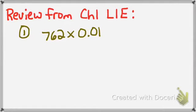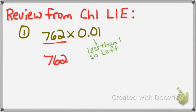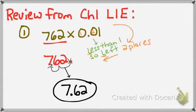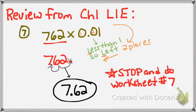Example 7: 762 times 0 and 1 hundredth. I see a power of 10 number — a 1 with 0s. I focus on my other number, 762, and write it down. 0 and 1 hundredth is less than 1, so I know I have to move my decimal to the left. I go back into the number, and there are two 0s, so I'll be moving my decimal two places to the left. I look at my 762, remove the invisibility cloak, cross out my decimal, and move it two places to the left. My answer is 7 and 62 hundredths.